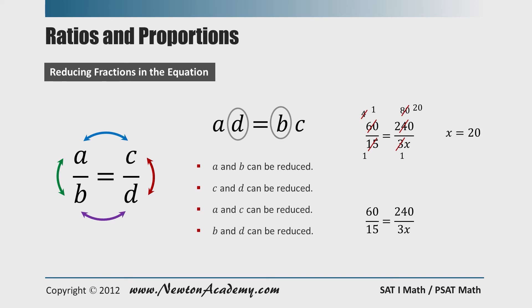Let's do it another way for an exercise. We can cancel 60 and 240, and 15 and 3, and after cross multiplication, we have the same answer, x equals 20.